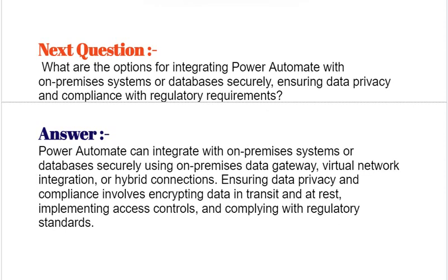Next question: What are the options for integrating Power Automate with on-premises systems or databases securely? Power Automate can integrate with on-premises systems or databases securely using on-premises data gateway, virtual network integration, or hybrid connections. Ensuring data privacy and compliance involves encrypting data in transit and at rest, implementing access controls, and complying with regulatory standards.